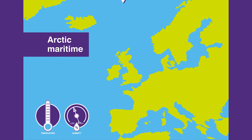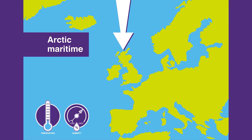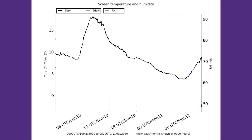Arctic maritime air is extreme polar maritime air coming down to the UK straight from the north over the Arctic Ocean. It tends to bring wintry weather to Scotland and isolated snowy showers further south, triggered by air rising over local orography. On the 11th of May 2020 — the Sunday Boris Johnson announced how we would come out of the first Covid lockdown — arctic maritime air swept down across the country and temperatures fell by over 10 degrees Celsius through the day.